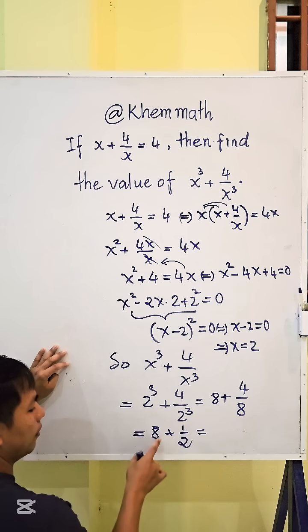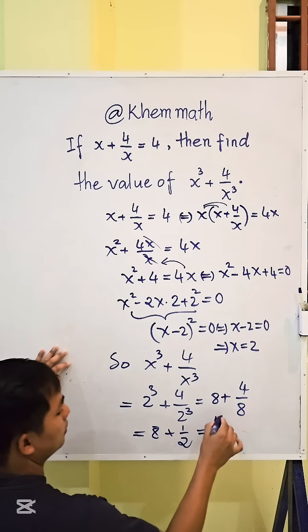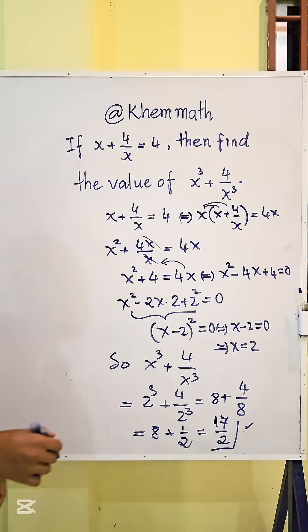And here, we multiply 2 cubed to get 8. We get 8 plus 4 divided by 8, which equals 8 plus 1/2. That's 16 plus 1 over 2, which gives us 17 over 2. That's our answer.